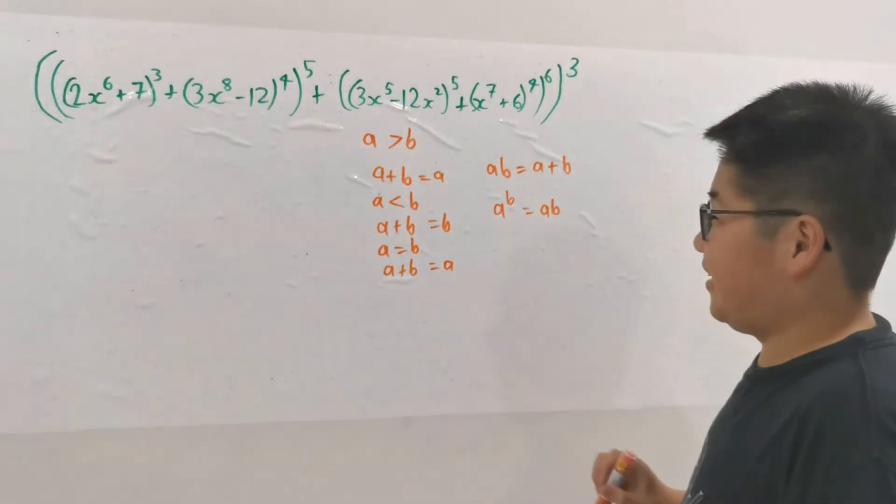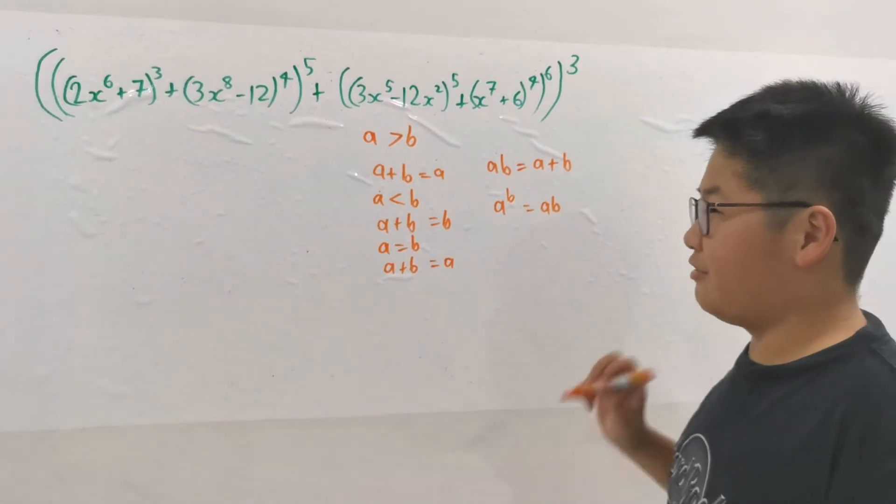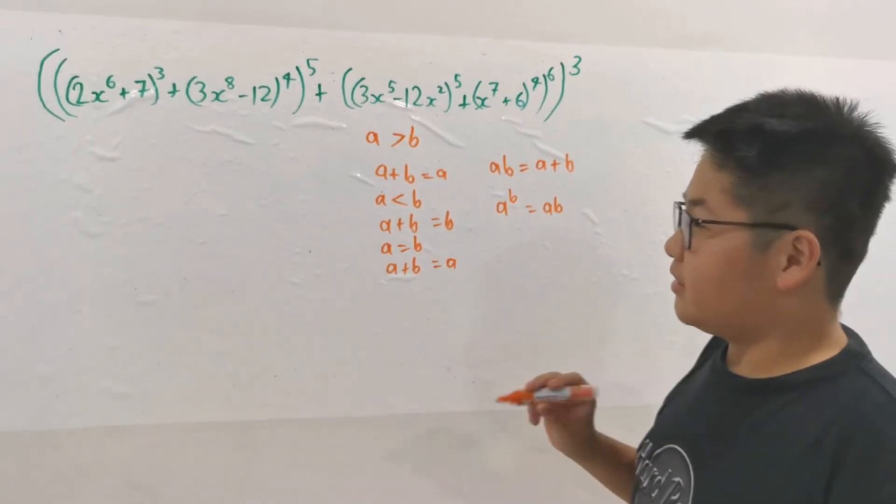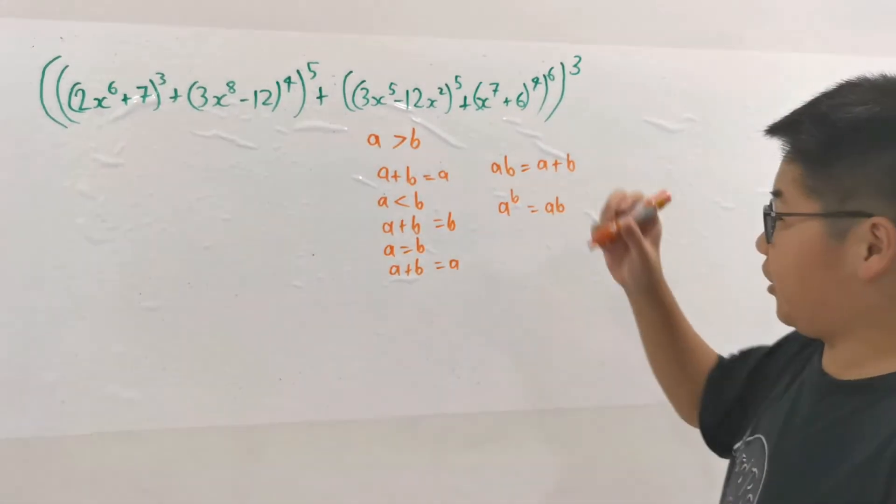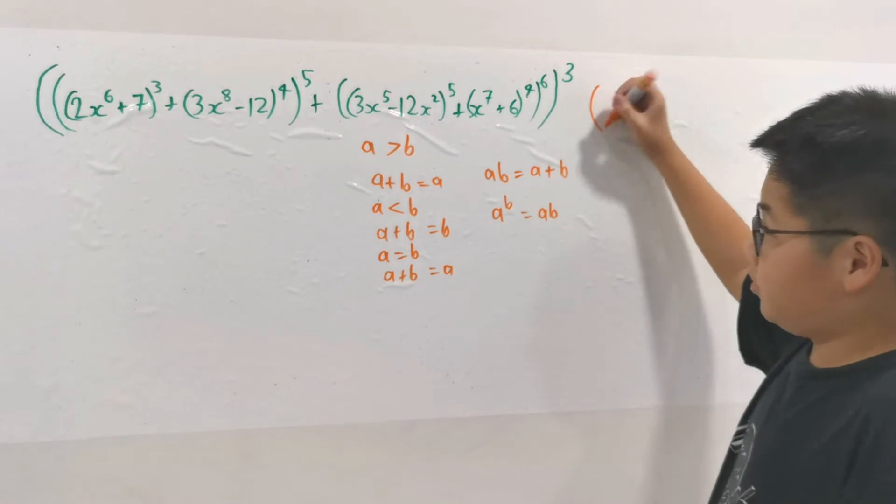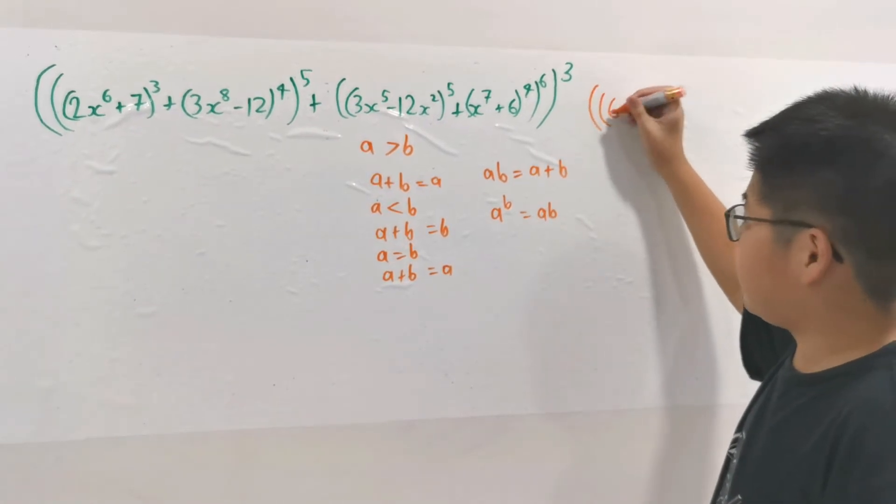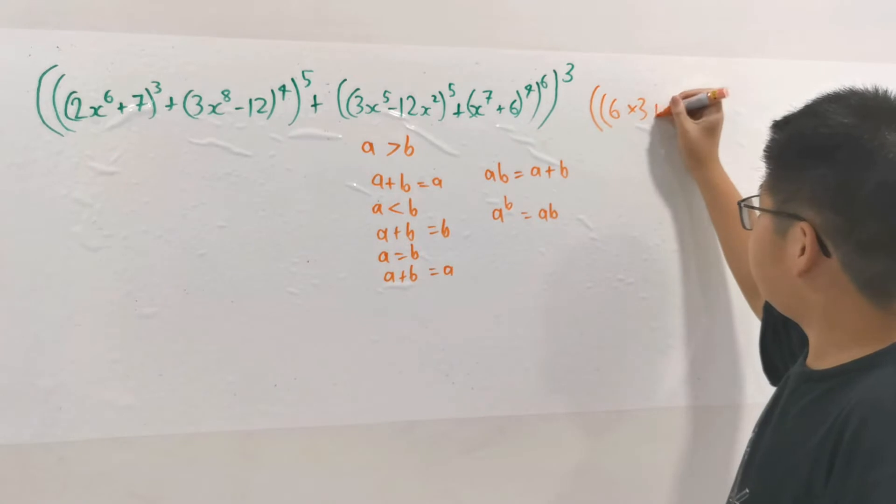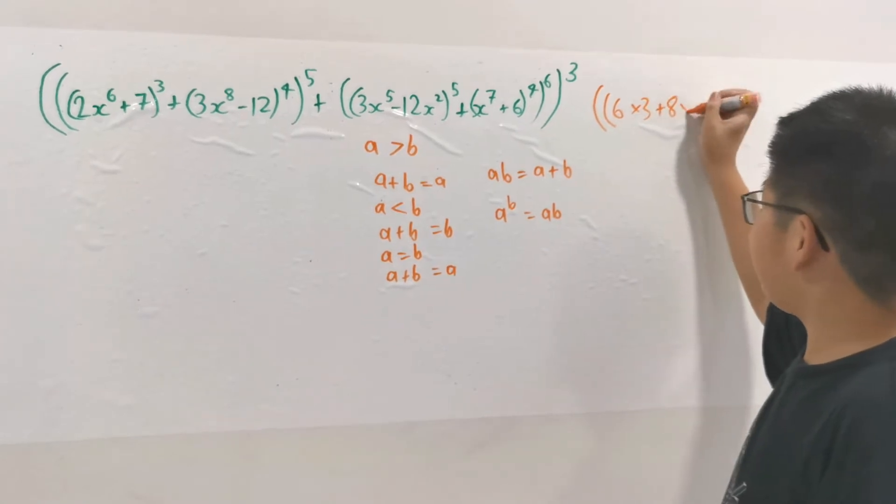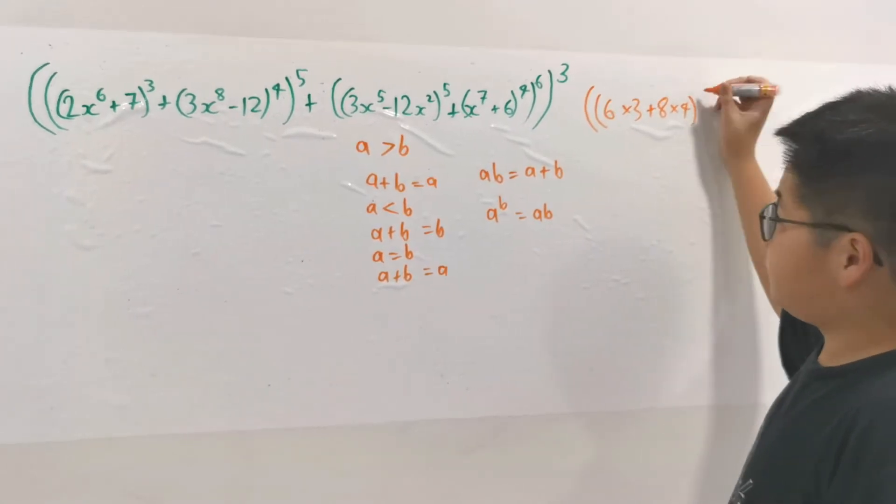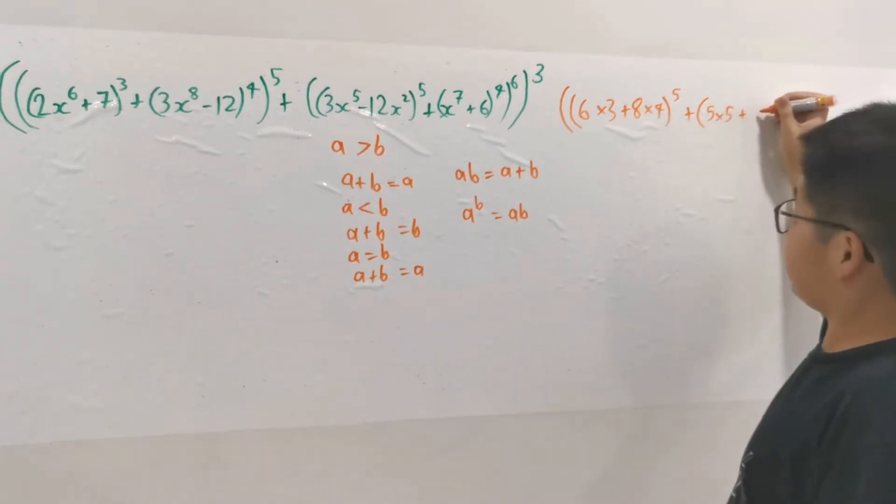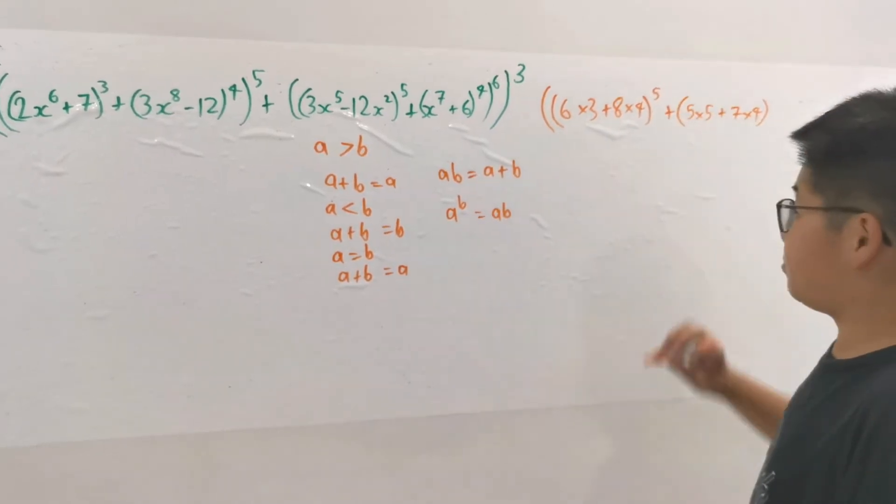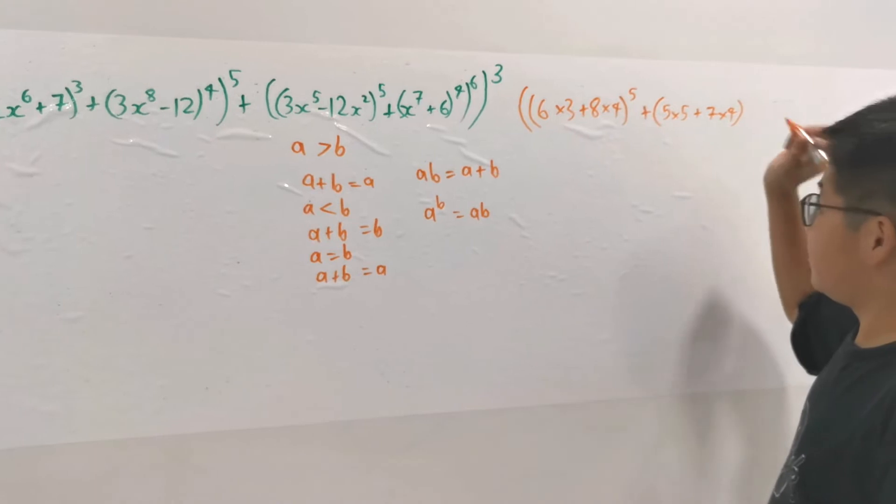Let's convert the whole thing into degree arithmetic. Since this is 6 and this is to the power of 3, let's write down the highest degrees: (6×3 + 8×4)^5 + (5×5 + 7×4). This times is normal arithmetic and this plus is degree arithmetic. This is a taxing polynomial to write down.